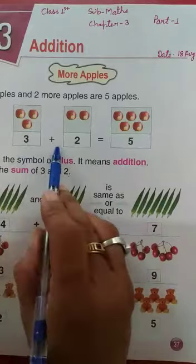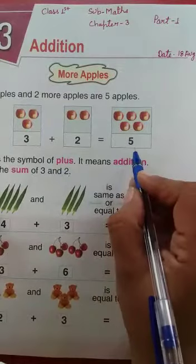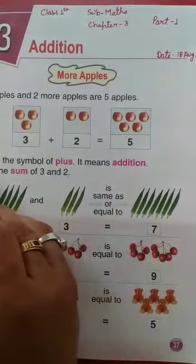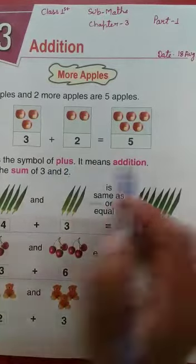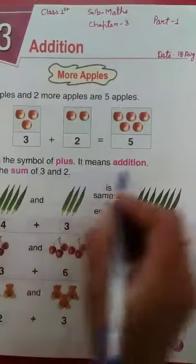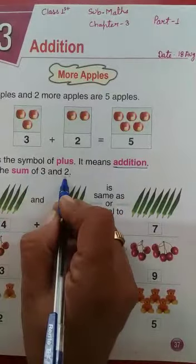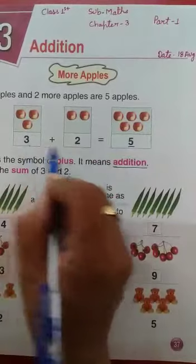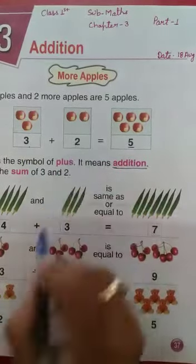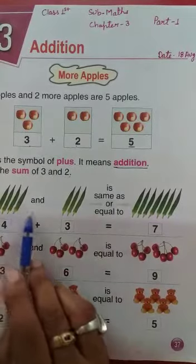Yaani 3 plus 2 is equal to 5. Yaani 3 or 2 ko plus karte hai toh kya hota hai? 5. The symbol of plus, it means addition. Yaani plus ka nishaan ka kya matlab hai? Addition. 5 is the sum of 2 and 3. Yaani 5 kiska sum hua? 3 and 2 ka.